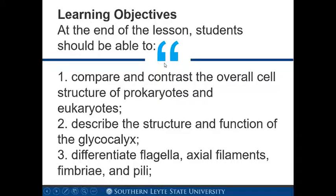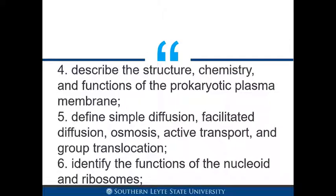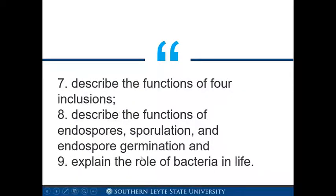Learning Objectives: At the end of the lesson, students should be able to compare and contrast the overall cell structure of prokaryotes and eukaryotes; describe the structure and functions of the glycocalyx; differentiate flagella, axial filaments, fimbriae, and pili; describe the structure, chemistry, and functions of the prokaryotic plasma membrane; define simple diffusion, facilitated diffusion, osmosis, active transport, and group translocation; identify the functions of the nucleoid and ribosome; describe the functions of spore inclusions; describe the functions of endospores, sporulation, and endospore germination; and explain the role of bacteria in life.